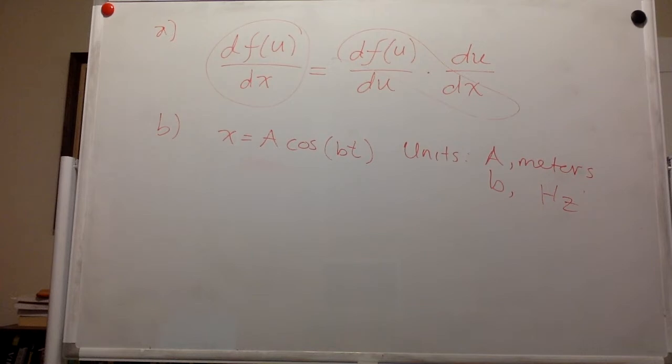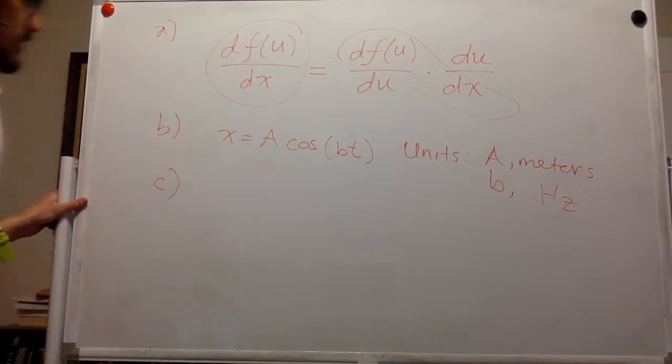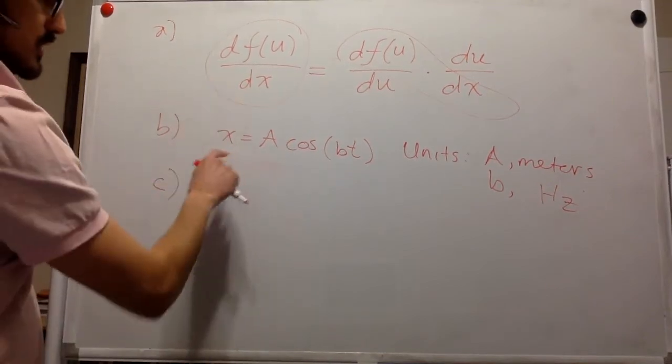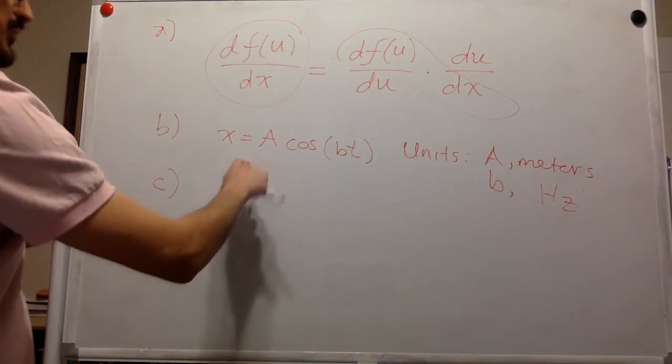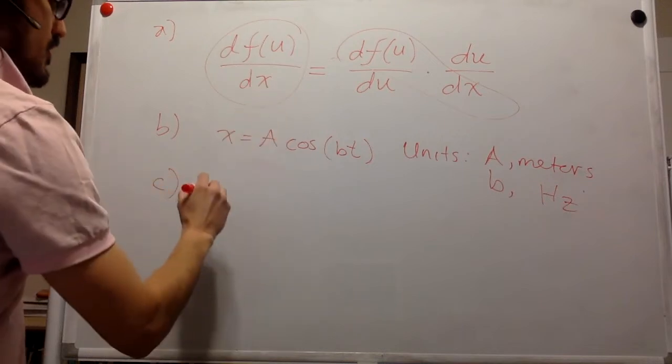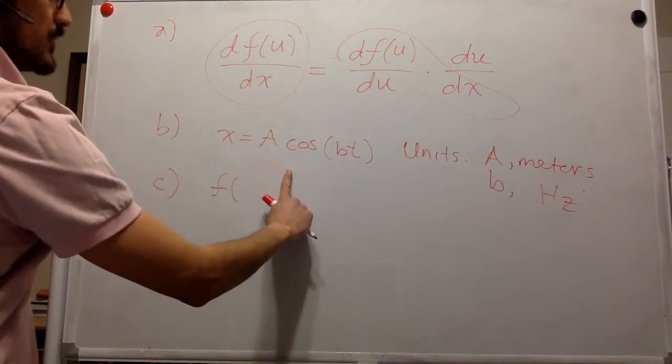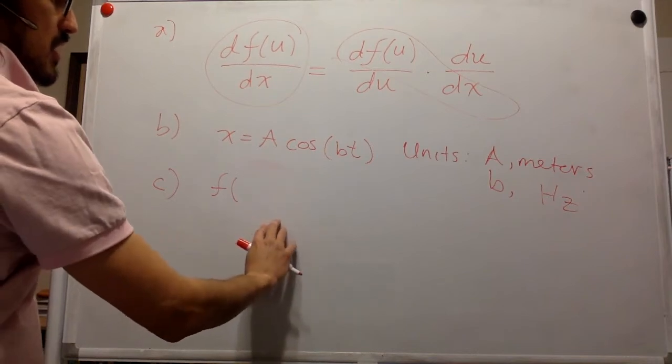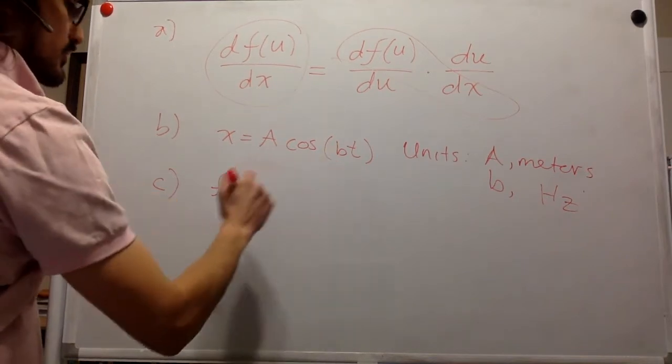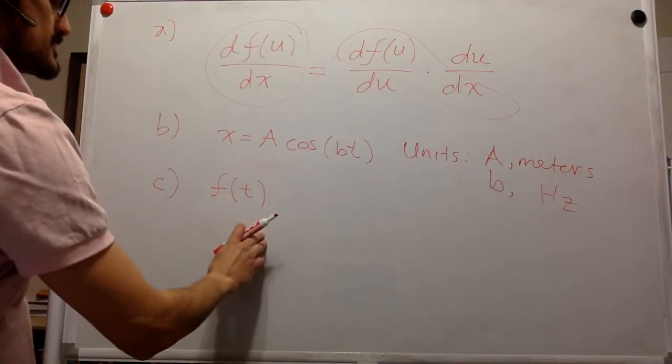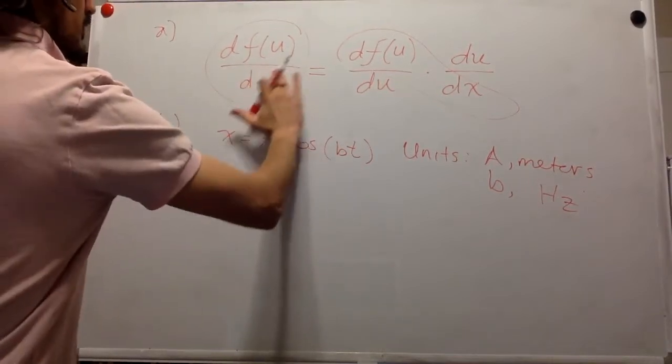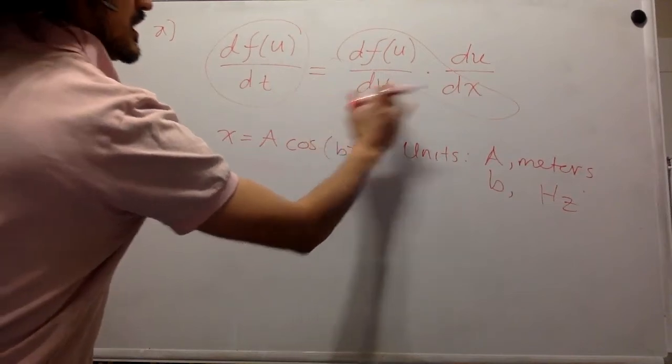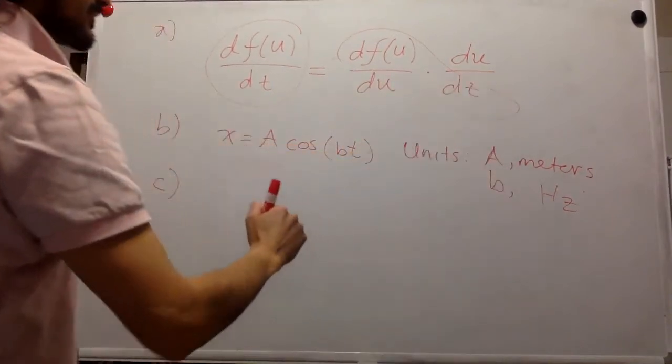So for part C, it says find the velocity of this object and check that the chain rule has indeed given an answer with the right units. So we're given a hint here that we have to use the chain rule to get the velocity. So let's rewrite this one. So here, instead of f of u, it's going to be a function of Bt. So this is going to be t, and this is going to be t.